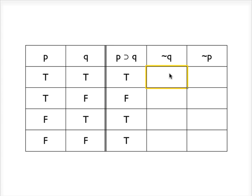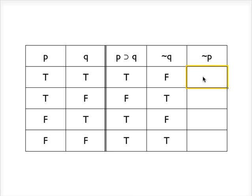For the negation, we're just going to flip the truth values assigned to Q. Where Q is true, not-Q will be false. Where Q is false, not-Q will be true. And the same thing for not-P — we just flip the truth values assigned to the atomic sentence P. Where it's true it's going to be false, and where it's false it's going to be true.